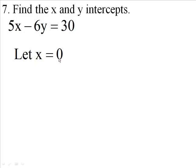It's a very easy thing. When you let x be 0, we're going to plug in 0 in here in place of the x. Then 5 times 0 is 0.